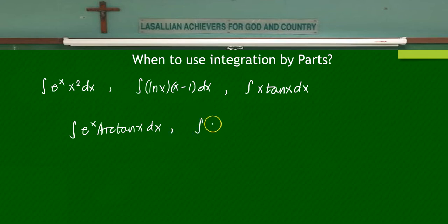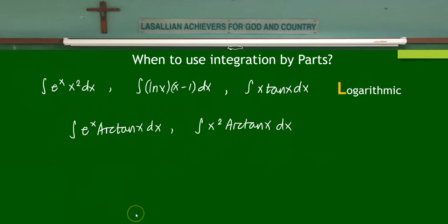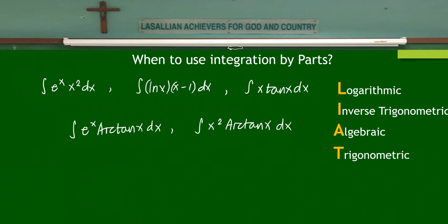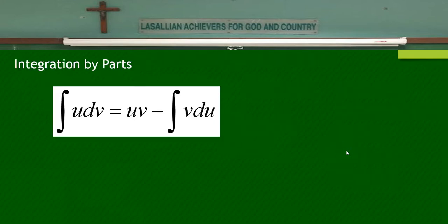Another case is an inverse trigonometric function coupled with an exponential function, such as eˣ·arctan(x) dx, where we can use integration by parts. Basically, what we have is a combination of these function types: logarithmic, inverse trigonometric, algebraic, trigonometric, and exponential. When you have a pairing of any two of these, you may use integration by parts.